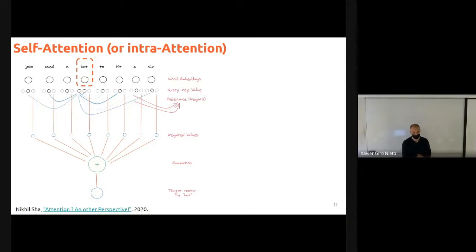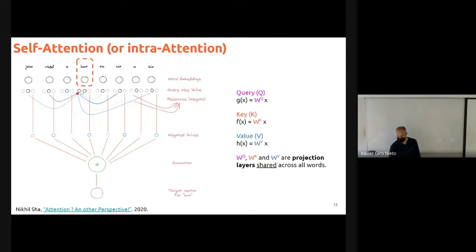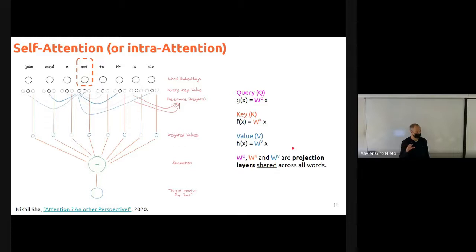Remember that in order to compare and compute the attention scores, there are going to be matrices WQ, WK, and WV that we are going to learn. These projection weight matrices are shared across all tokens.